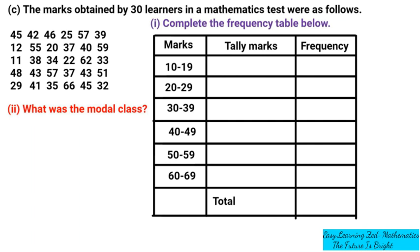The first question is to complete the frequency table below. We also have question C2, which asks what is the modal class. Let's start with question one — completing the frequency table. We're going to look for marks ranging between 10 and 19, then 20 and 29, then 30 and 39, then 40 and 49, 50 to 59, and 60 to 69.